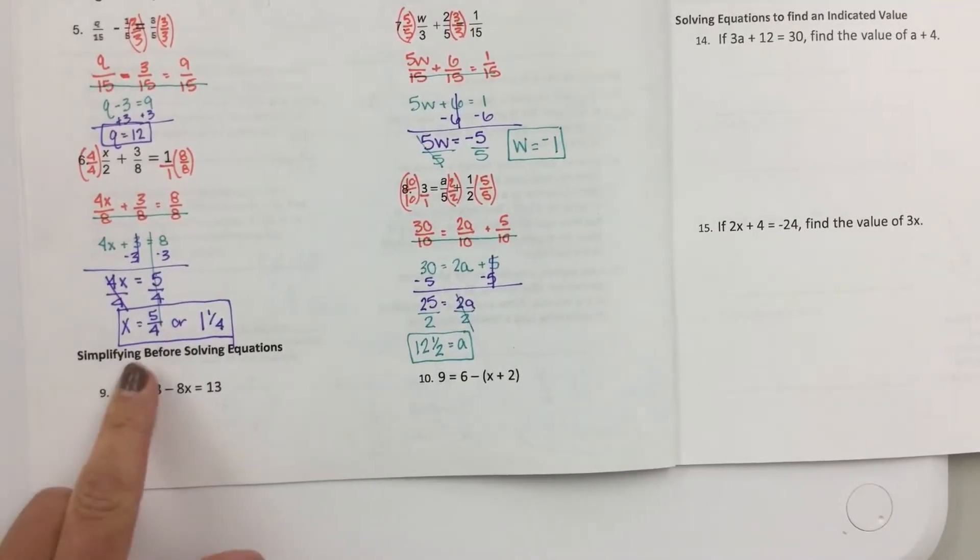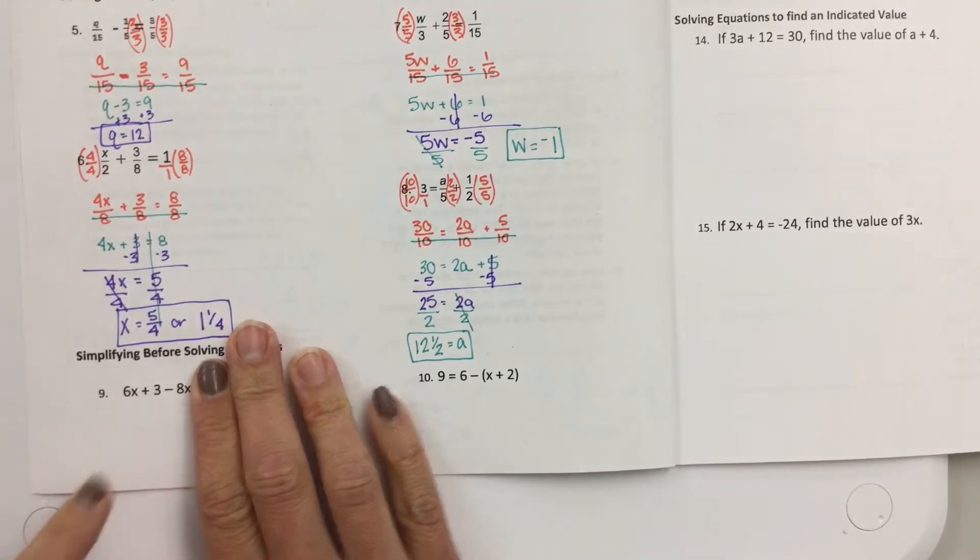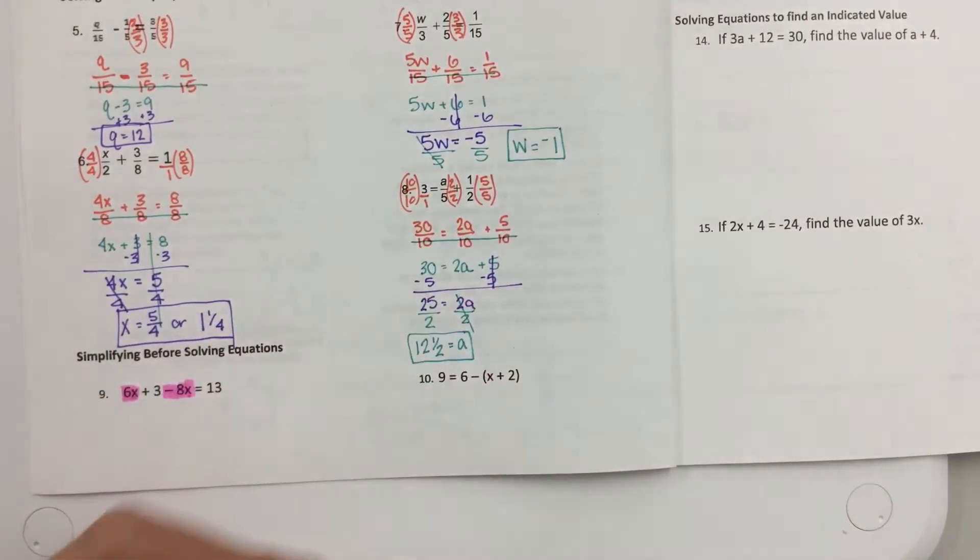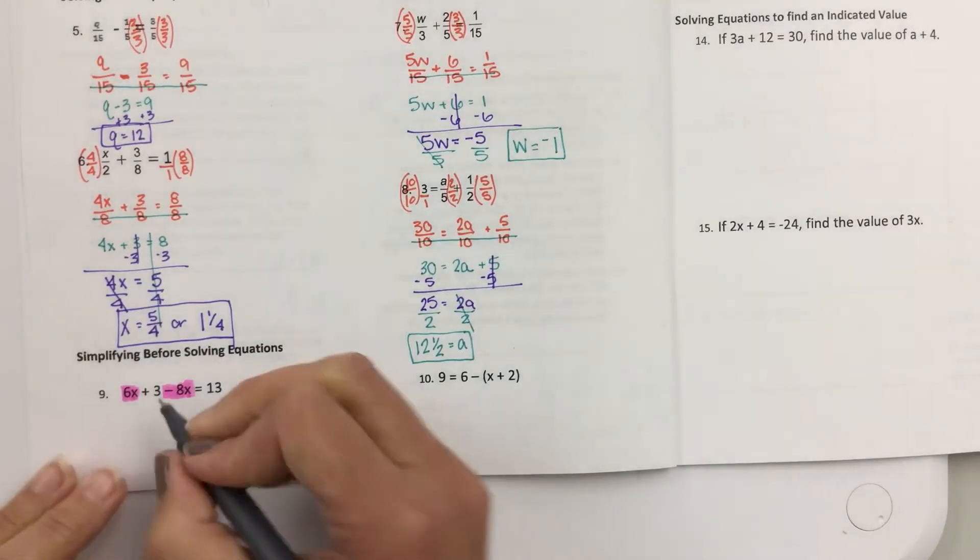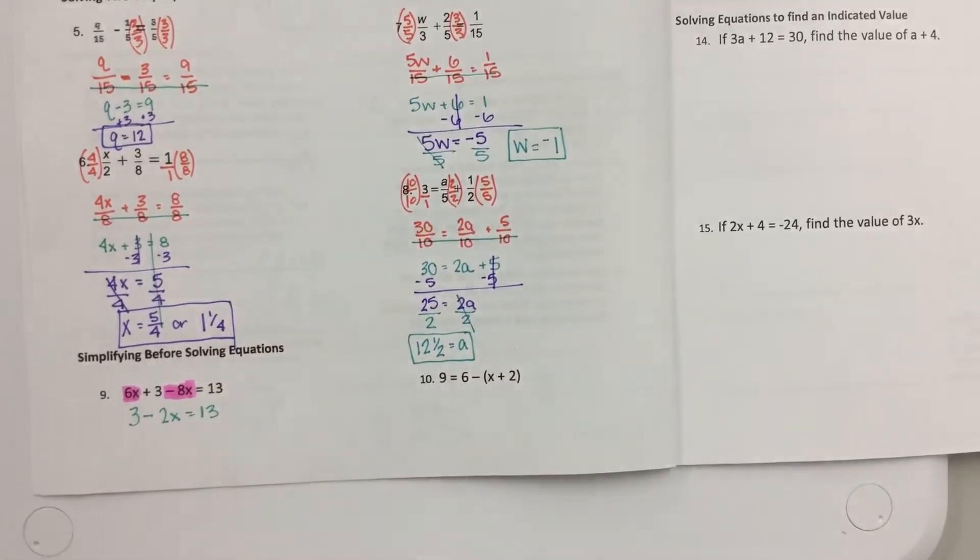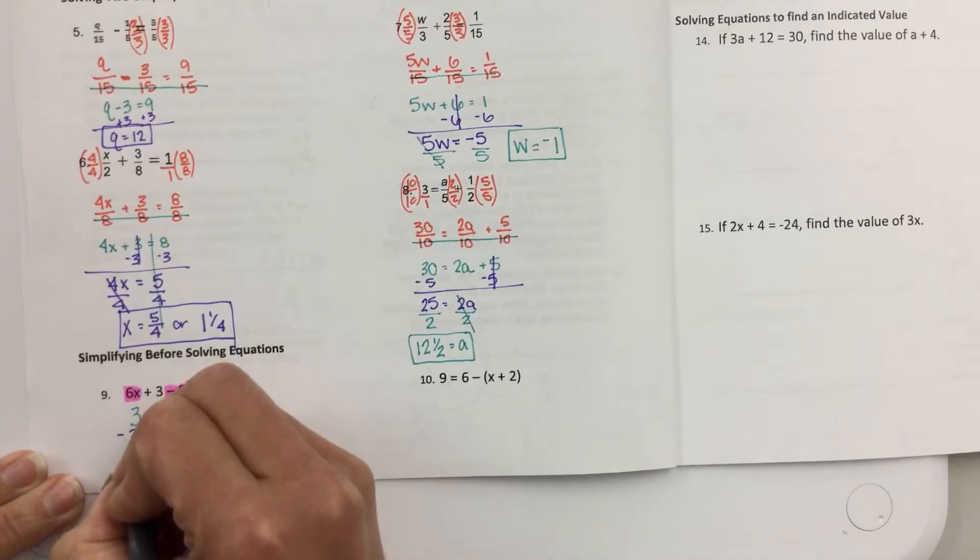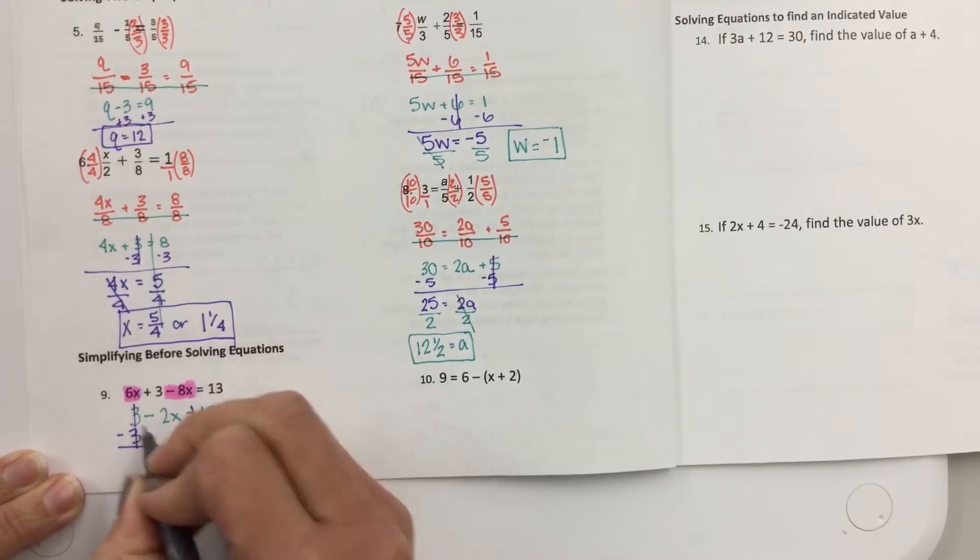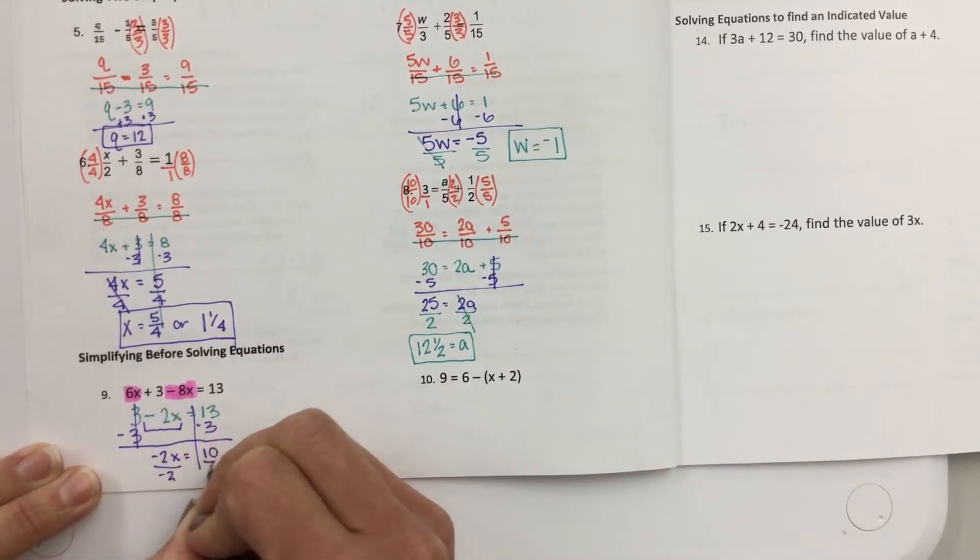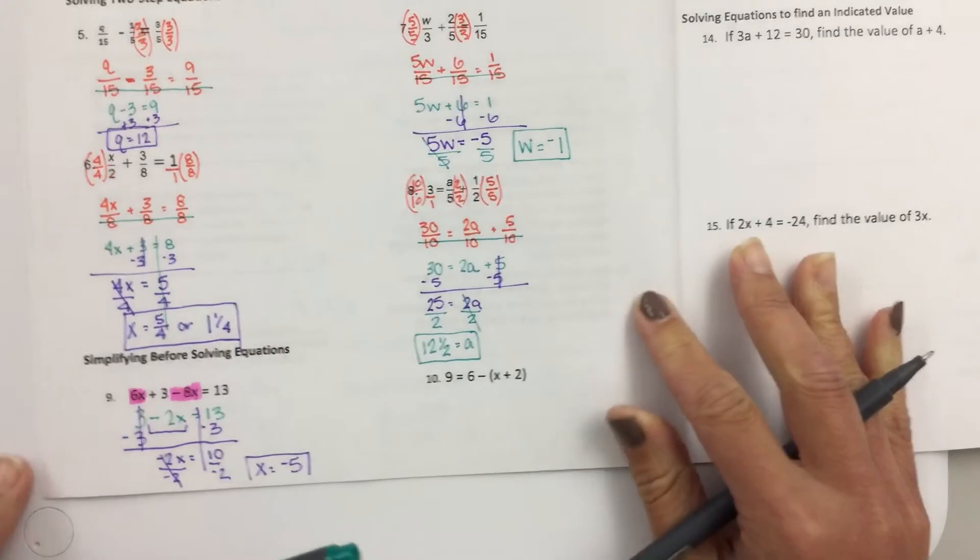The next type, they say simplify before solving the equation. So one thing that I always do on these ones is I look at the side of the equation. Are there any like terms that I can add together? So for example, on this one, I have a positive 6x and a negative 8x that I can add together first. So if I have 6x and 8x, I'm just going to write it like this, minus 2x. So then who do I move first? I've got to move the 3 by subtraction. Don't forget that you have to bring down this negative. And then you divide both sides by that negative 2. x equals a negative 5.